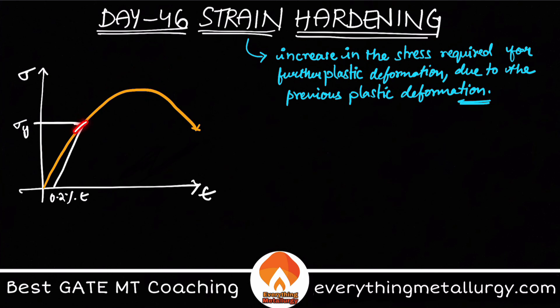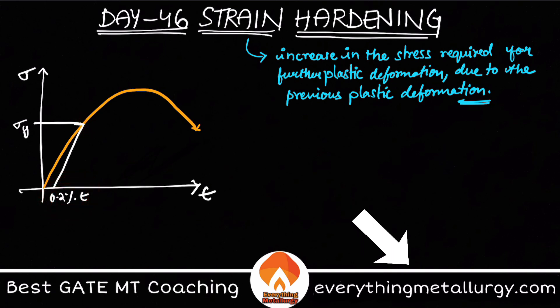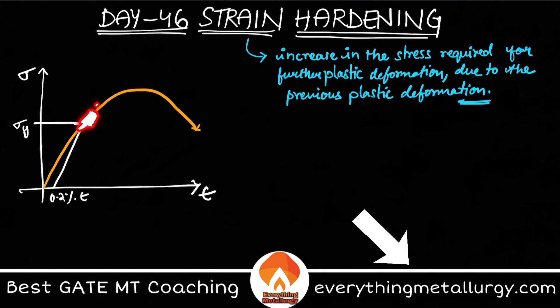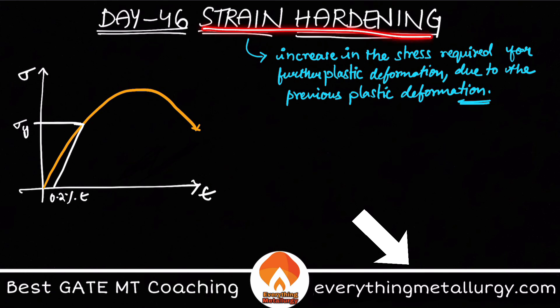This is actually happening because of the previous plastic deformation which is already done. Let's say somewhere here the plastic deformation is starting — actually, already some amount of plastic deformation is already done in the body, which is 0.2 percentage of the total deformation. Because of that plastic deformation, there will be some force opposing slip, opposing further plastic deformation. To overcome it, we need to increase the stress. That is what the statement explains: increase in stress required for further plastic deformation due to already done previous plastic deformation. This phenomenon is called strain hardening.